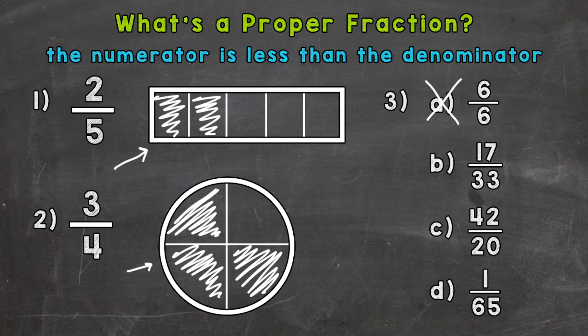B, we have 17 over 33. So our numerator is less than the denominator. Therefore, we have a fraction that has a value less than a whole, and it's a proper fraction. So B is a proper fraction.